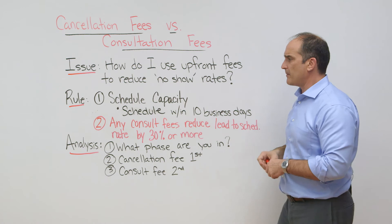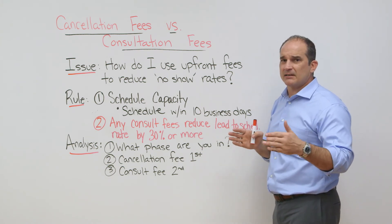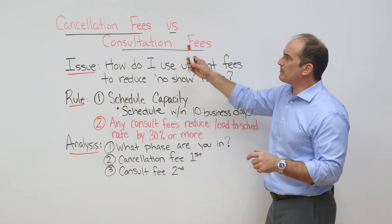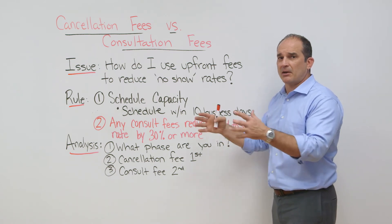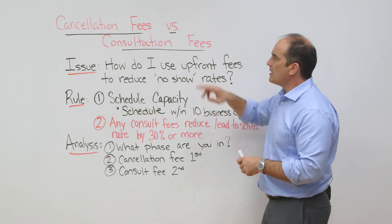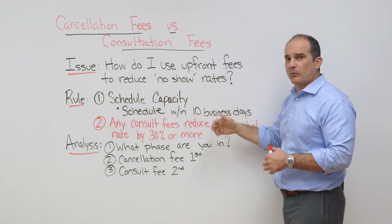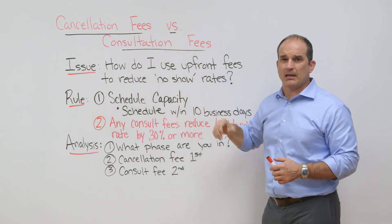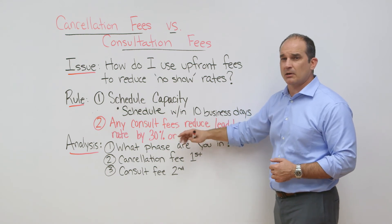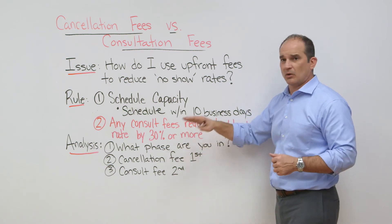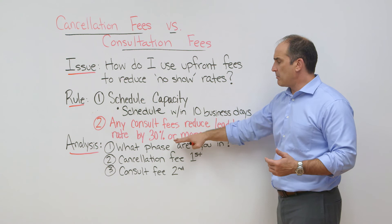The first rule to think about is what availability you have in your schedule. If you consistently can schedule people within 10 business days, be very careful about how you use cancellation or consultation fees. Most likely, assuming you've given the consultation hours you want based on your lifestyle choices, you'll want to start with a cancellation fee — until you need to schedule people out farther than 10 business days. That way the consumer only pays if they cancel, which offsets risk without a full upfront commitment.